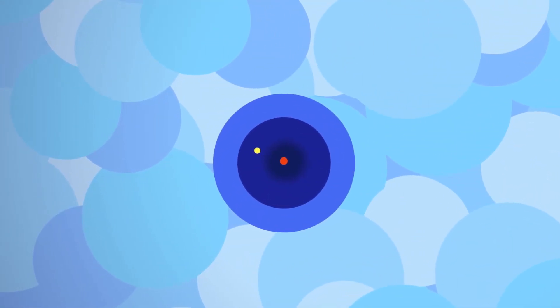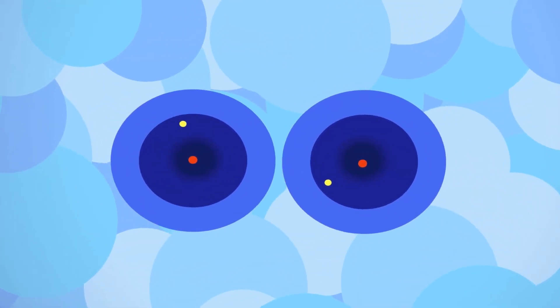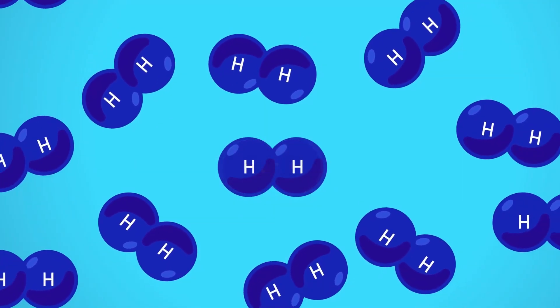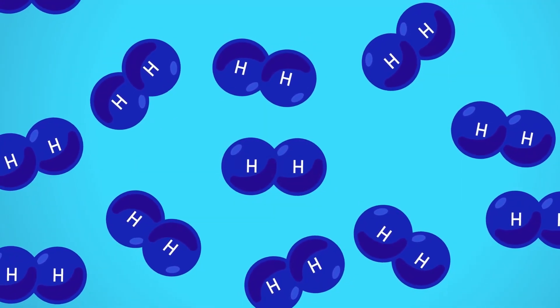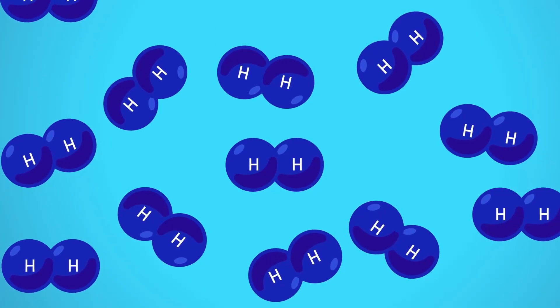For example, a hydrogen molecule is formed by two hydrogen atoms chemically combined. This is how the hydrogen molecule is found in nature and can be denoted as H2.